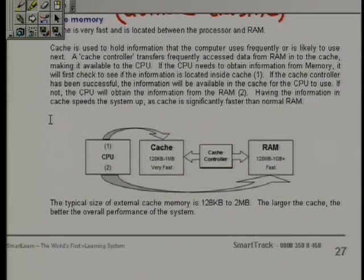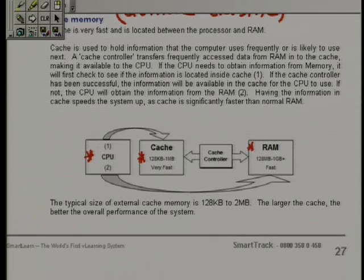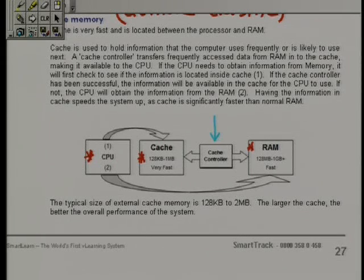Because the CPU — here we've got the CPU sitting over in the corner. Here we've got cache. So we've got the CPU and we've got cache, and obviously we've got RAM sitting over here. Remember, everything that the CPU does has to be in RAM for it to actually process that particular piece of code. Now this is the magic device sitting in the middle here — the cache controller. Because the cache controller does a very, very good job for the CPU.